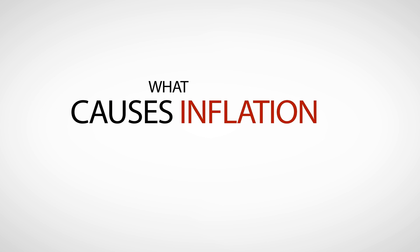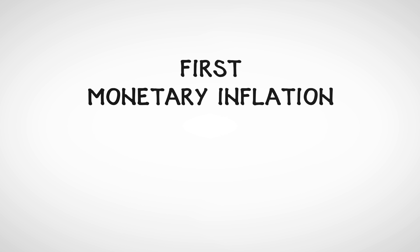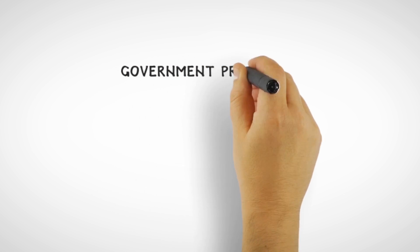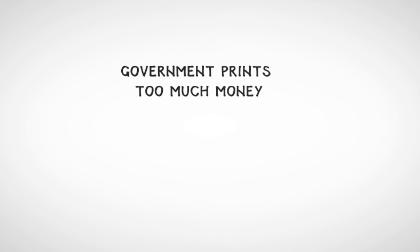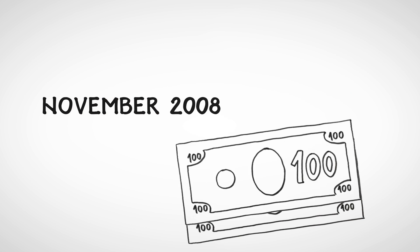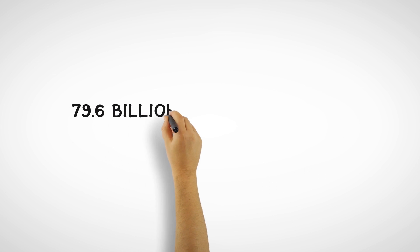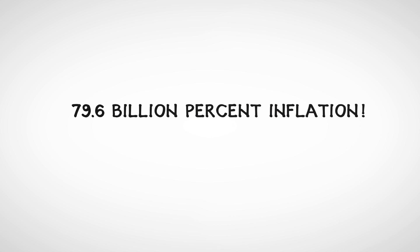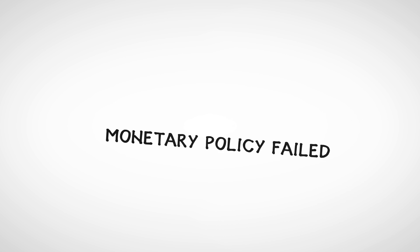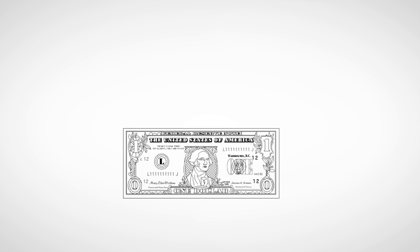What causes inflation? We'll examine three causes. First is monetary inflation. This occurs when a government prints too much money. For example, the government of Zimbabwe printed so much money that in mid-November 2008, the country experienced 79.6 billion percent inflation. As a result of the failed monetary policy, its official currency is now the U.S. dollar.